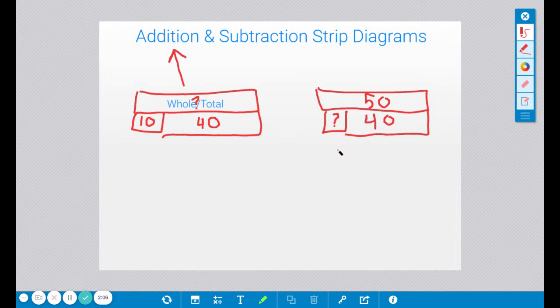Now, we know what it is because of fact families, but if you were just to see this, you would know that this strip diagram represents subtraction. And the reason why is because you're given the whole and total, but you're missing a part. Because in subtraction, you're not putting together, you're not composing, you're taking away from a whole, from a total. So when you see a strip diagram that is giving you the whole, but you're missing a part, that is subtraction.